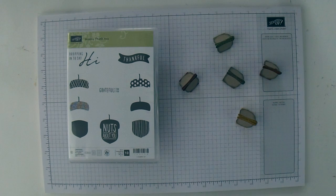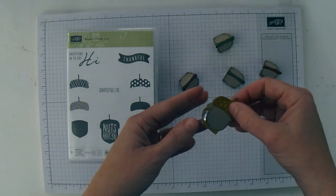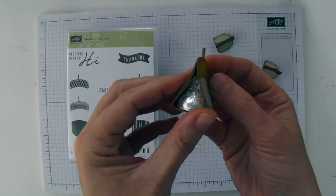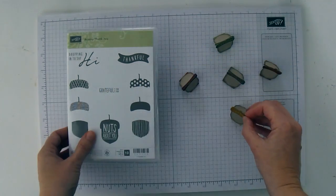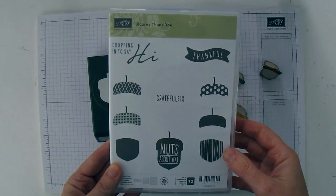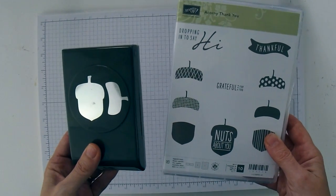Hi, I'm Brenda Quintana coming to you from the Beehive. Today I'm going to show you how to make this adorable acorny kiss tent using the Acorny Thank You Stamp Set and the Acorn Builder Punch.